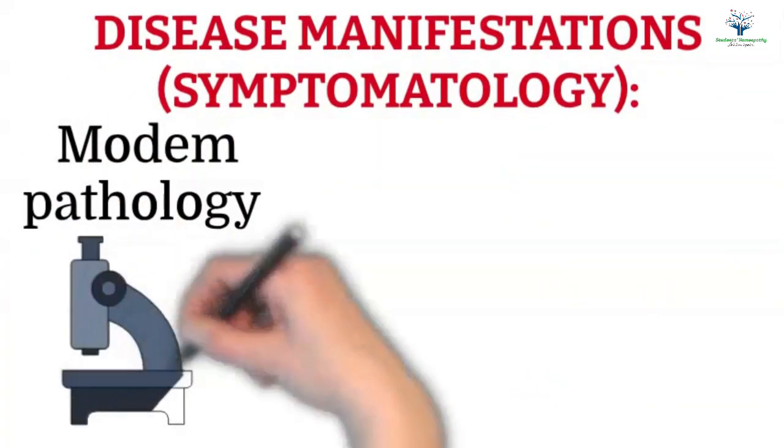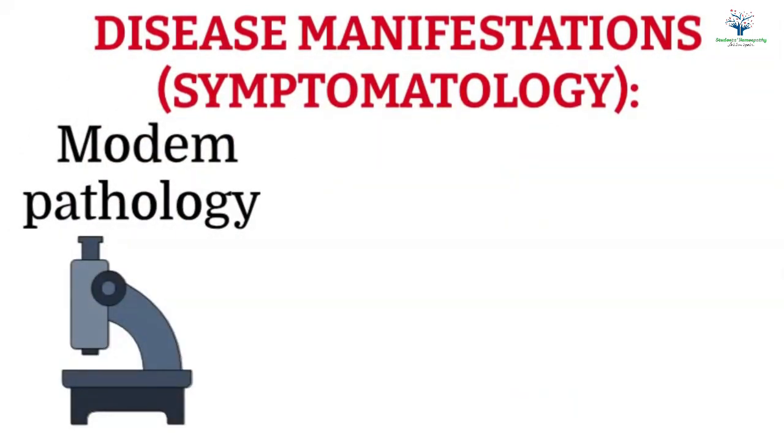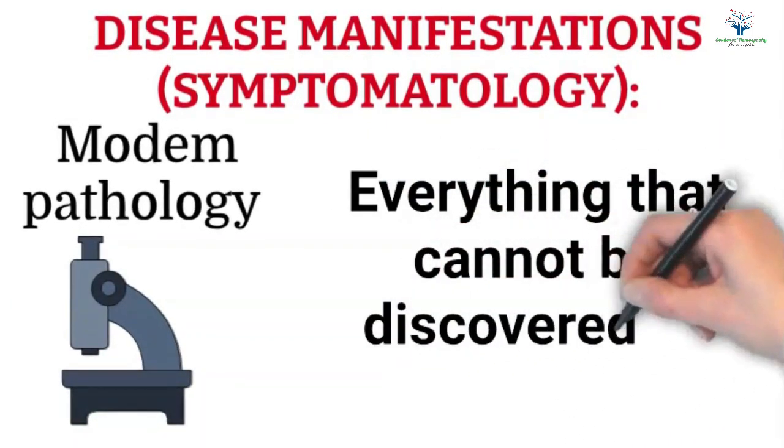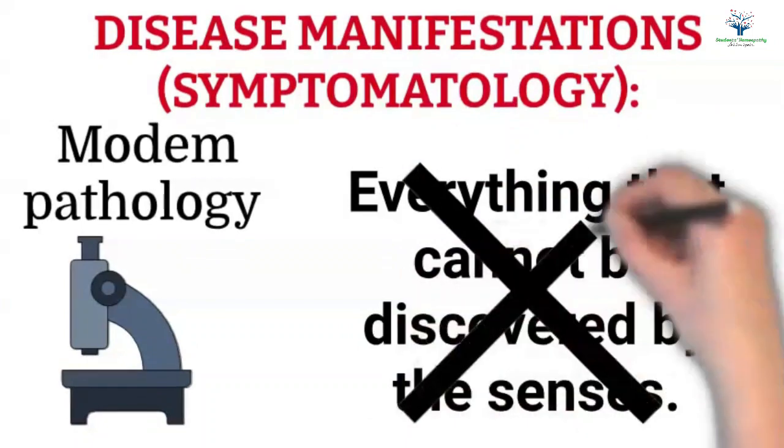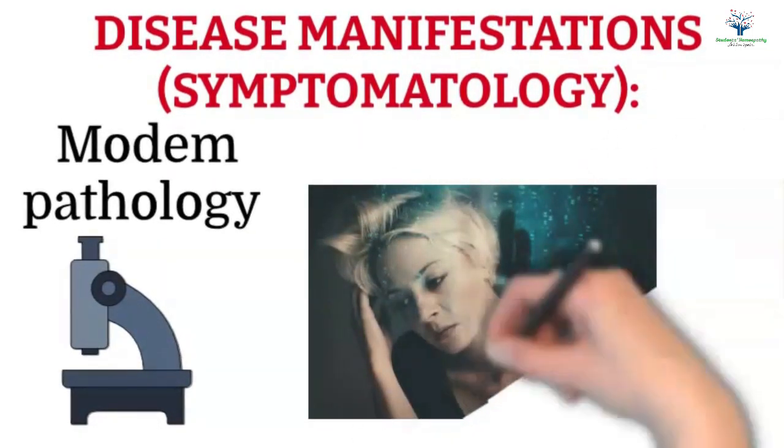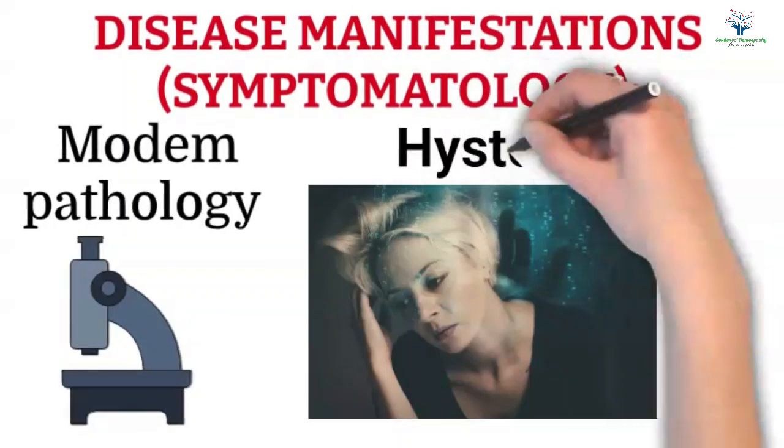The modern pathology leads them to think so and they deny everything that cannot be discovered by the senses. Kent explains this by an illustration that how the nervous girls are not allowed to tell their symptoms and one-sidedly stamp their suffering as hysteria.